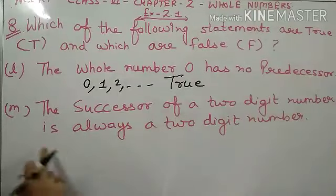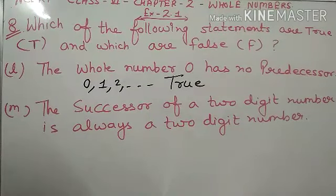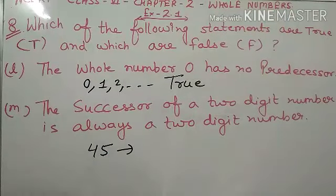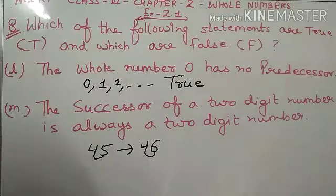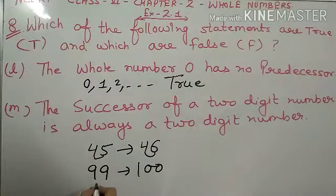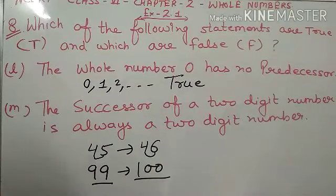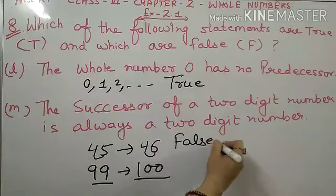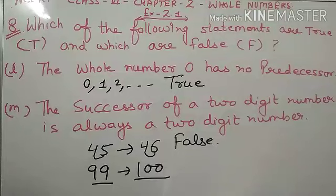Now last part: 'The successor of a two digit number is always a two digit number.' Suppose mere paas two digit number hai 45. Ab iska successor batana hai — successor matlab aagye wala number, toh 45 ka successor hoota hai 46. Yeh bhi two digit hai, yeh bhi two digit hai. But agar 99 lete hai, 99 ka next number kya hoota hai? 100 hoota hai. Ab yeh hai two digit but 100 hoota hai three digit. Iska matlab yeh statement always correct nahi hoti. Toh iska matlab yeh statement false hai. Toh yeh hamara exercise complete ho chuka hai bachoh. Agar aapko koi bhi doubt ho toh please comment karke mujhe zaroor batayega.